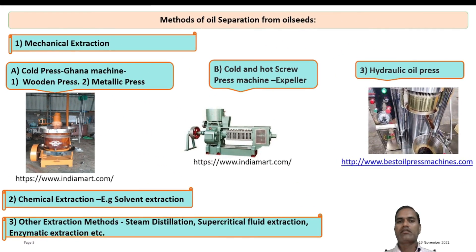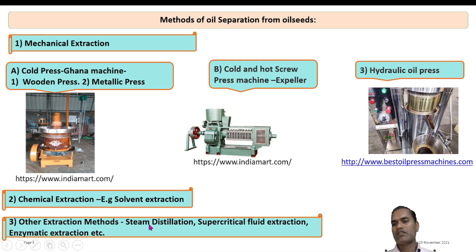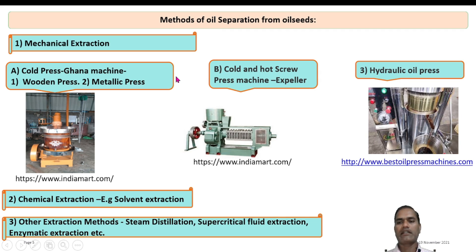The main methods used for extraction of oil from oil seeds fall into three categories. First is the mechanical extraction process, which is the mechanical pressing process. Second is the chemical extraction, which is the solvent extraction process. Third are other methods including steam distillation, supercritical fluid extraction, and enzyme extraction. At the industry level, the major methods are mechanical extraction and solvent extraction, and a combination of both is commonly used.